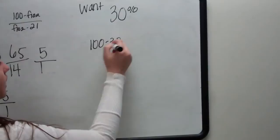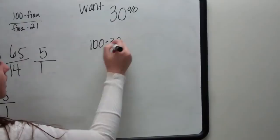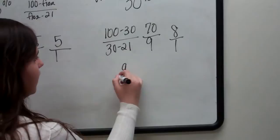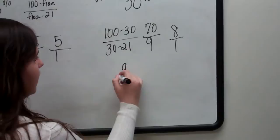For 30%, you do the exact same thing: 100 minus 30 divided by 30 minus 21, which is going to give me 70 divided by 9, which is going to give me a ratio of 8 to 1. So I have an air to oxygen ratio for 30% of 8 to 1.